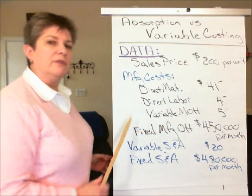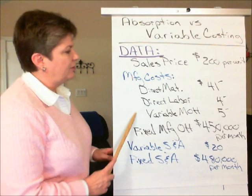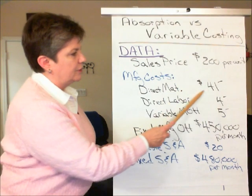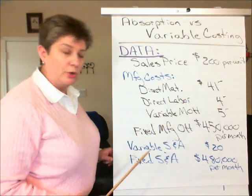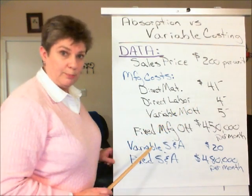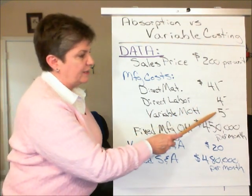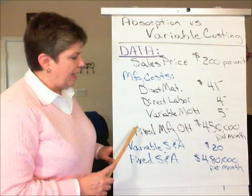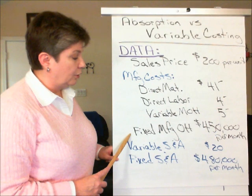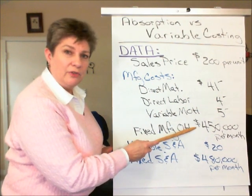In terms of the cost of producing that product, the manufacturing costs include the usual: the direct materials cost is $41 per unit, the direct labor cost is $4 per unit, variable manufacturing overhead is $5 per unit, and during any given month they incur fixed manufacturing overhead of $450,000.